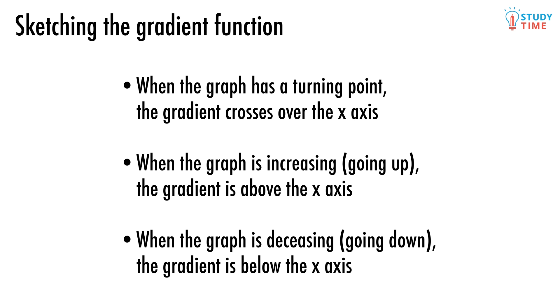We use these rules to help us out. When the graph has a turning point, the gradient crosses over the x axis. When the graph is increasing or going up, the gradient is above the x axis. And when the graph is decreasing or going down, the gradient is below the x axis.